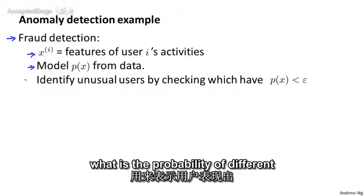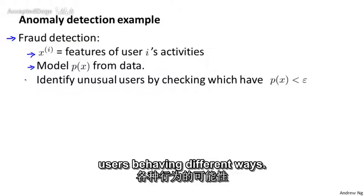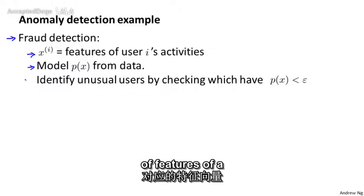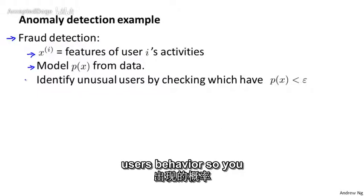And what you can do is build a model to say, what is the probability of different users behaving different ways? What is the probability of a particular vector of features of a user's behavior?